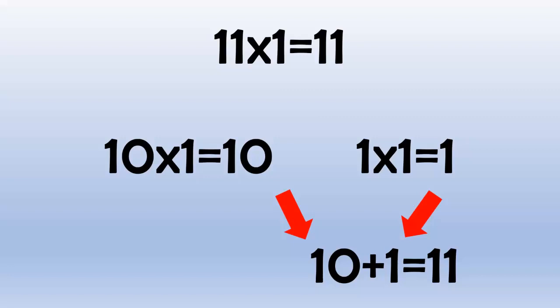11 times 5 equals 55, because 10 times 5 equals 50, and 1 times 5 equals 5, and 50 plus 5 equals 55.